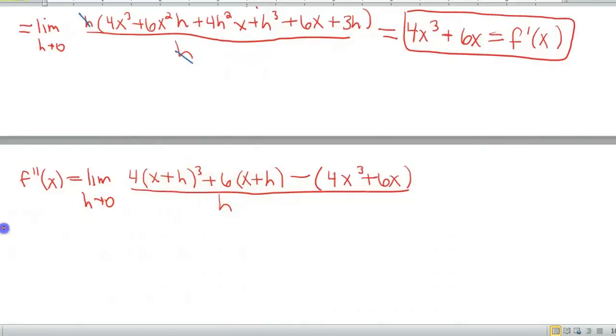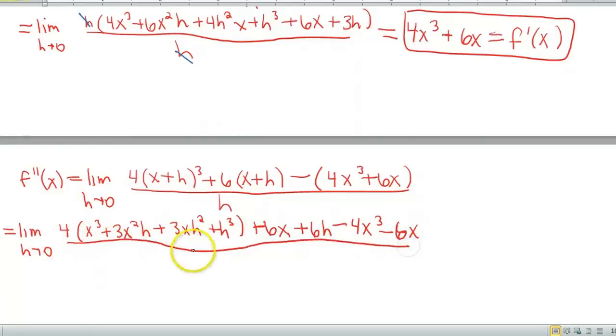Okay. So now we gotta do some algebra with this stuff. And I'm gonna start over here this time. Limit h approaches 0. So 4 times, remember x plus h quantity cubed means we have to multiply that out 3 times. So when you do that and collect all your like terms, you'll end up with x cubed plus 3x squared h plus 3xh squared plus h cubed. Distribute my 6 through. So that'll give me 6x plus 6h. Distribute my negative through minus 4x cubed minus 6x. And then all of this is divided by h.